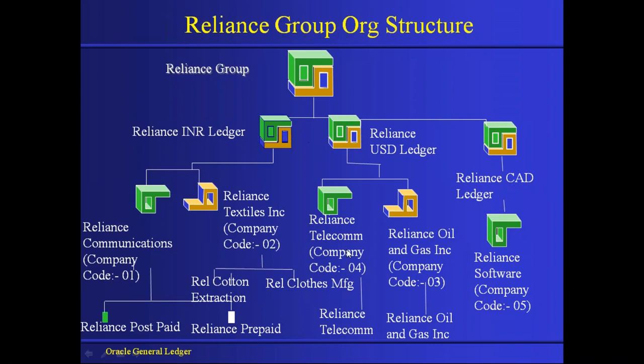Take this example: between company 04 and 03, Reliance Telecom and Reliance Oil and Gas. Reliance Telecom can provide telecom services to Oil and Gas, and Oil and Gas can provide oil-related services to Telecom. These are separate legal entities — even though they both fall under the Reliance Group, from a law perspective they are separate legal entities.